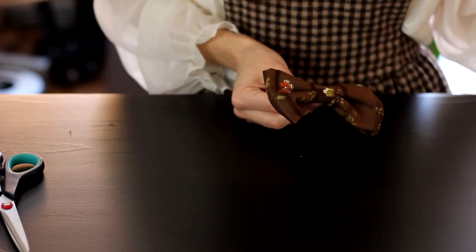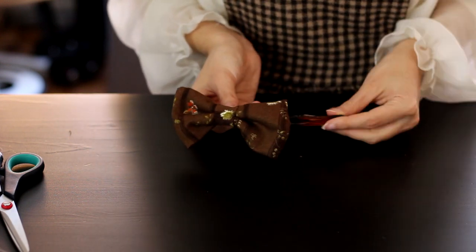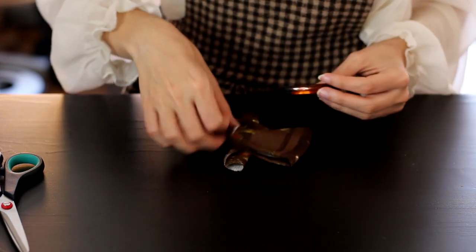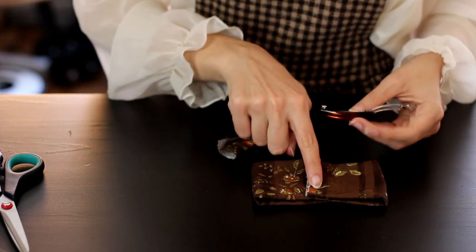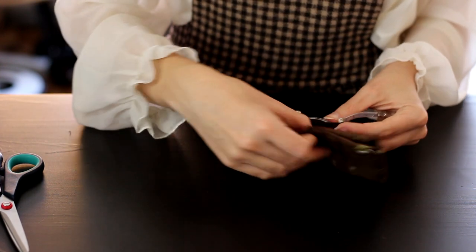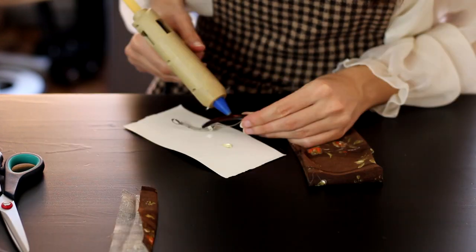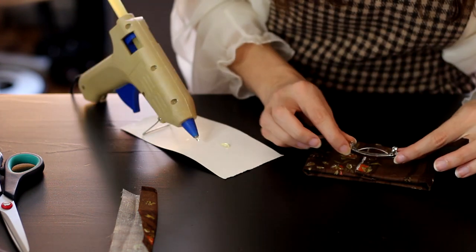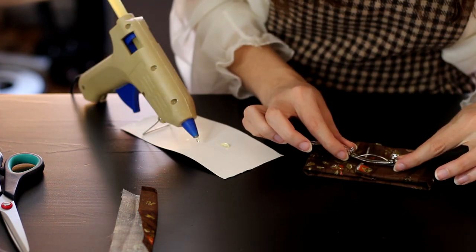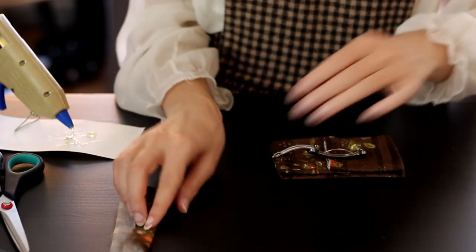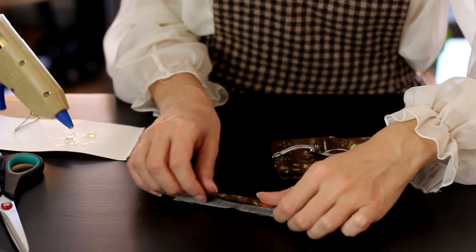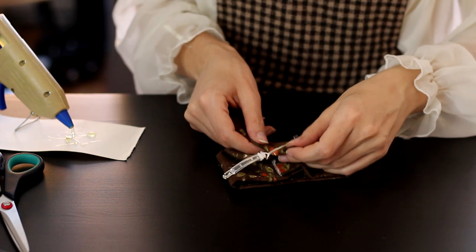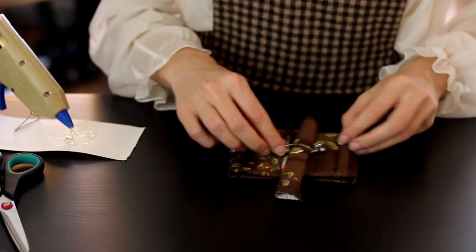Squish it. The way we're going to attach this is by using the hot glue gun, and I am actually going to start by hot gluing the center of the bow to the center of the clip, so that it is attached like that.